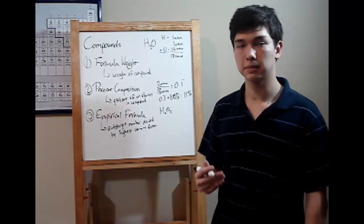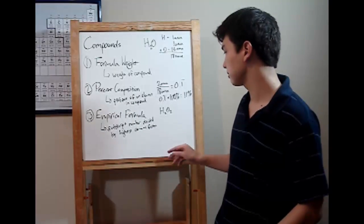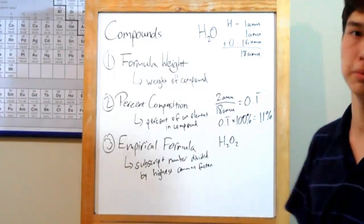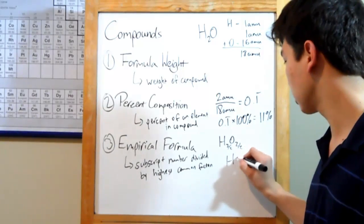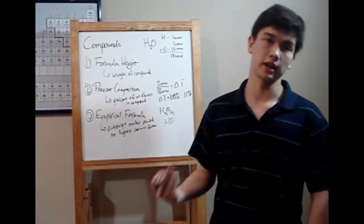So, if you wanted to make this an empirical formula, look for the greatest common factor. In this case, 2. Both 2 and 2 are divisible by that. So, divide them both by 2 and you get HO. That's your empirical formula for hydrogen peroxide.